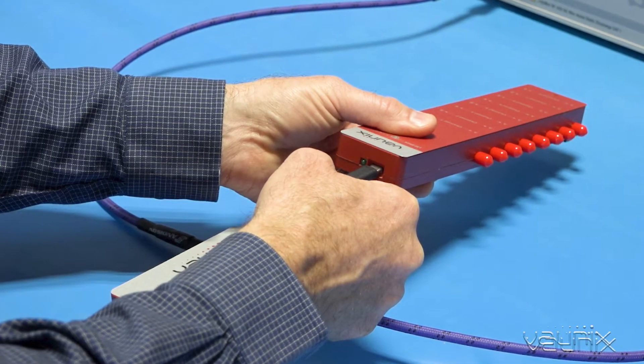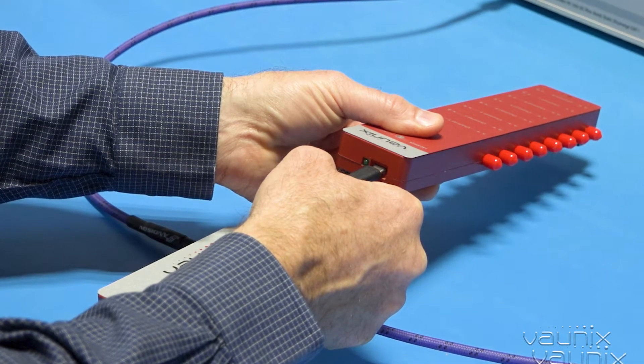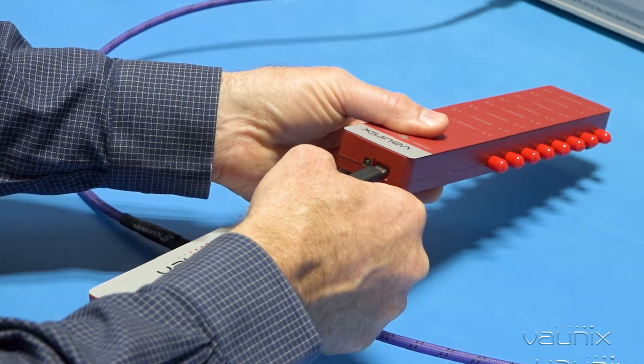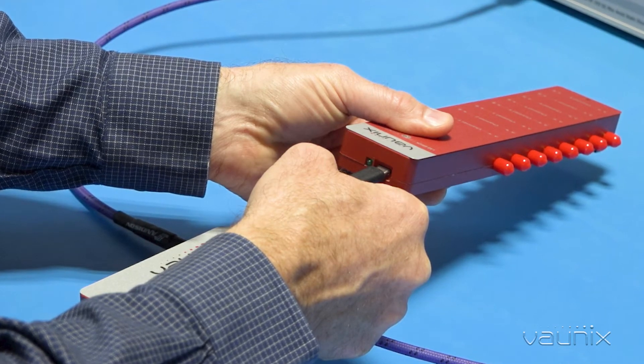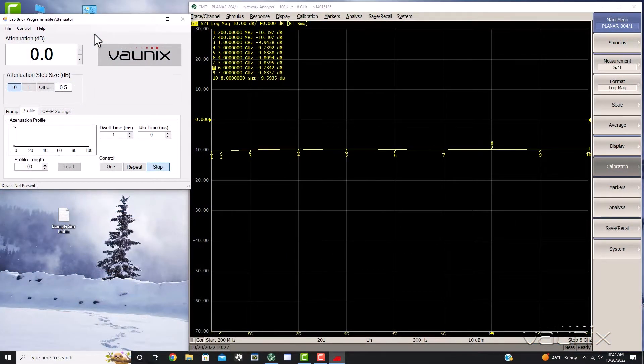Test setups with multiple paths require attenuators in each one, and Labric software accommodates this by allowing any number to be controlled from a single computer, either directly or through a powered USB hub.